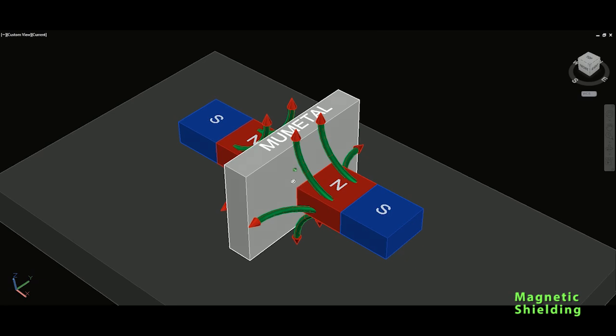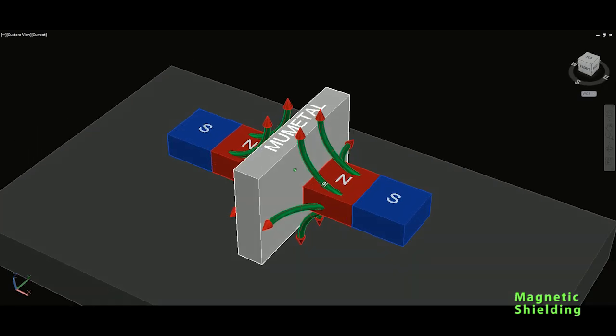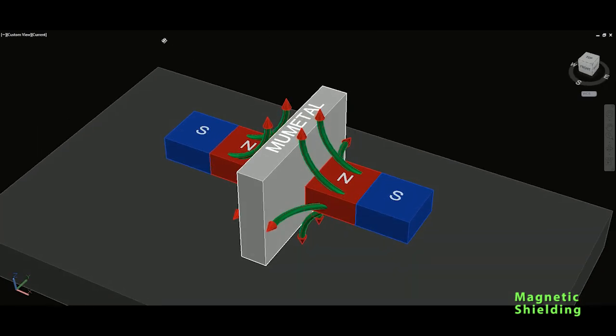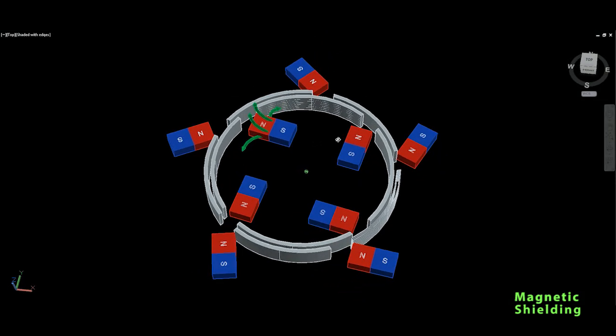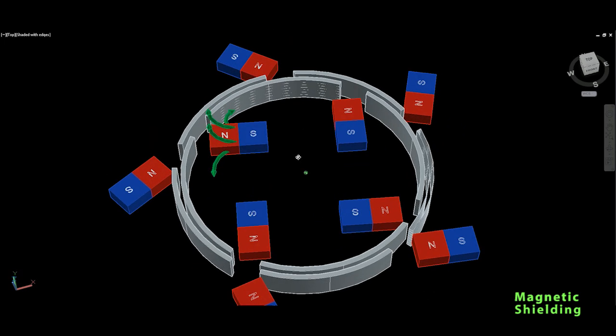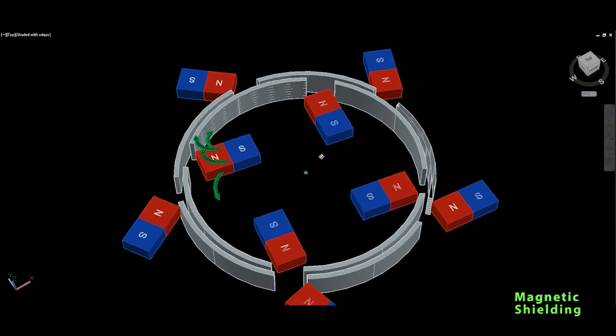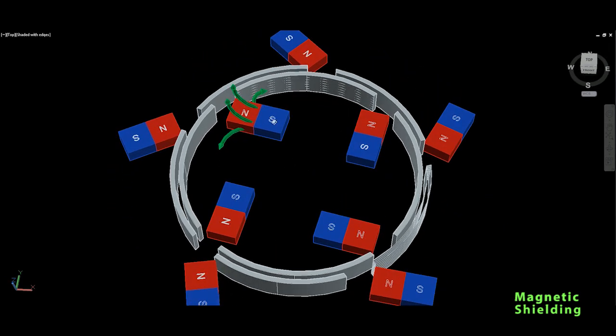And now I'll go to the second model which is our Christopher Getson generator I uploaded few days ago and see why this mu metal should work if this magnetic shielding works exactly as explained. As you can see, if I select the rotor, so this is the middle part which will rotate and the outer magnets are the stator.